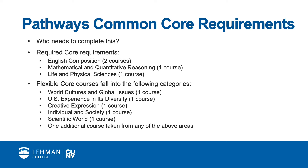The Common Core portion of the Pathways requirements totals 30 credits and exists at all of CUNY's campuses. There are two types of Common Core courses: Required Common Core and Flexible Core courses. The Required Common Core courses are as follows: two courses in English Composition, one course in Mathematical and Quantitative Reasoning, and one course in Life and Physical Sciences.